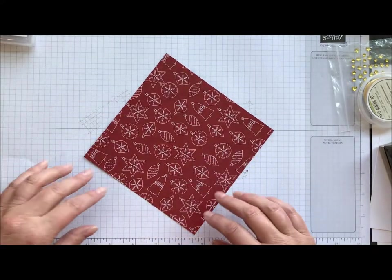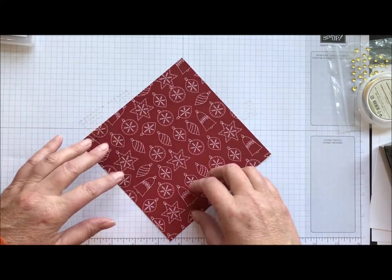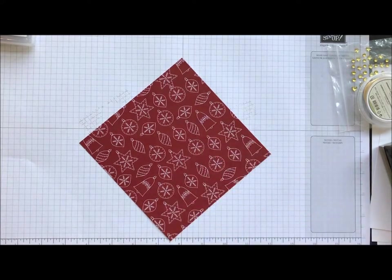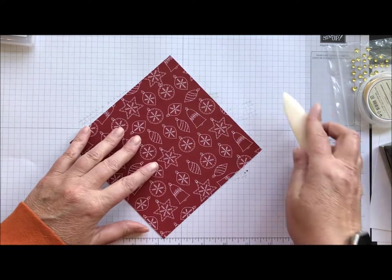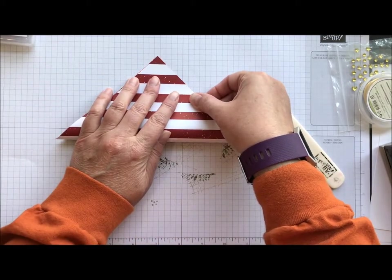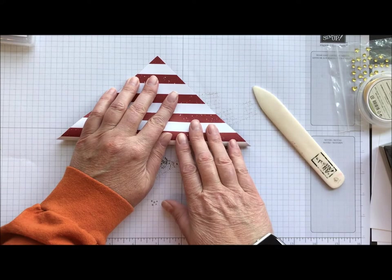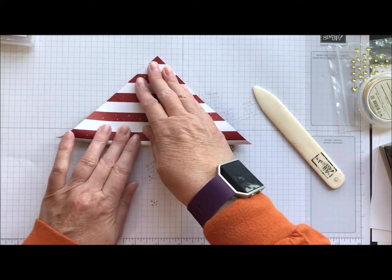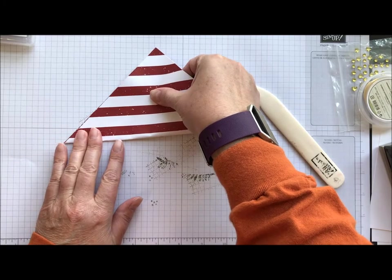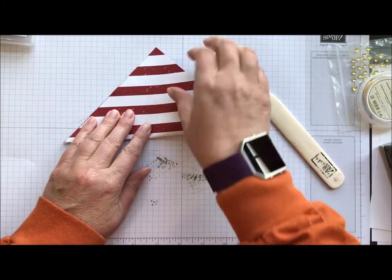So what we're going to do is to fold this in half and I seem to be missing my bone folder. There it is. Okay so we want to go corner to corner, point to point. We want to make sure everything is really nice and even and also use a bone folder to make those folds nice and crisp. That will help everything go together. It's a little bit like origami really.